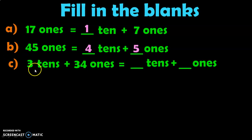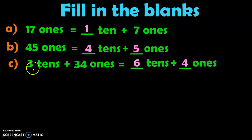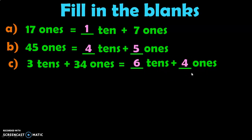The next question is 3 Tens plus 34 Ones. First look at the Ones place: 34 Ones can be written as 3 Tens plus 4 Ones. So 4 will be retained in the Ones place and the 3 Tens will be carried over to the Tens place. You get 3 plus 3, which is 6 Tens plus 4 Ones, giving you 64. Just to cross-check: 3 Tens is 30 plus 34 Ones also gives you 64, and 6 Tens plus 4 Ones also gives 64 — but this is the correct regrouped format.